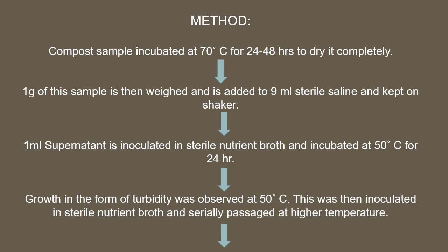Once you have the compost sample, incubate it at 70 degrees Celsius for 24 to 48 hours to remove moisture without killing the thermophilic bacteria. Then weigh one gram of this sample, add it to 9 ml of sterile saline, and keep on a shaker for proper mixing. Take 1 ml of supernatant from this saline suspension and inoculate it in sterile nutrient broth, then incubate at 50 degrees Celsius.